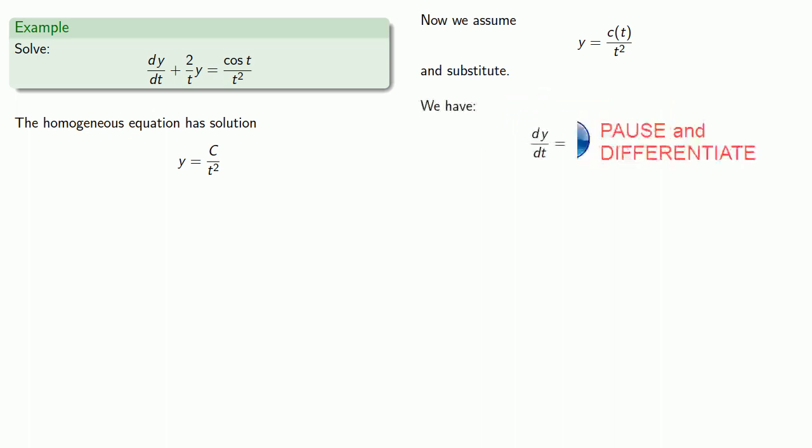So we find our derivative. We'll replace it in our original differential equation. And these fractions are messy, so let's get rid of them by multiplying through by t⁴.